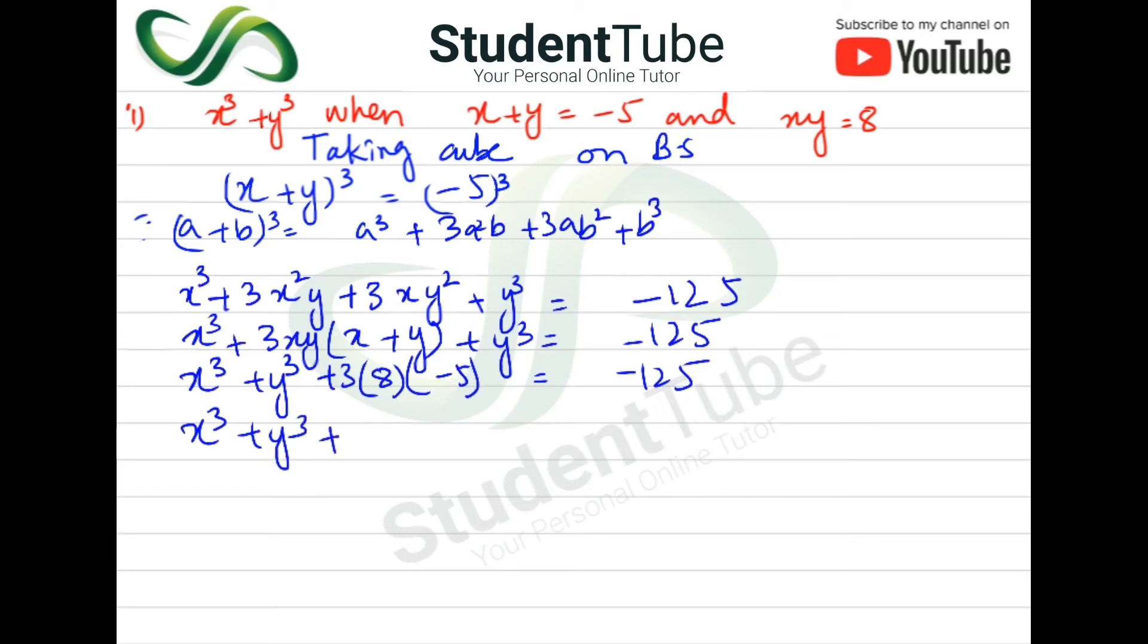x³ + y³ + 3 × 8 × (-5). When we multiply 3 with 8, it will be 24. And when we multiply 24 with 5, our answer will be -120, because 5 is minus.